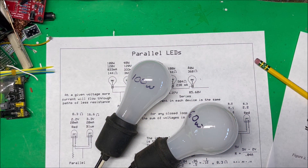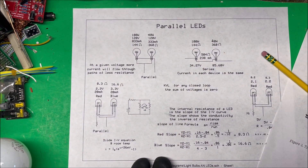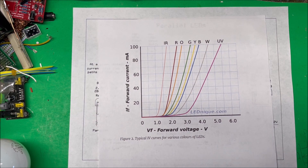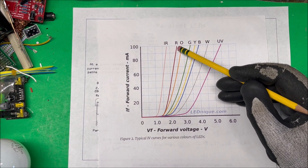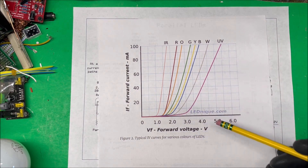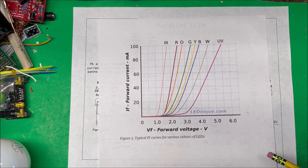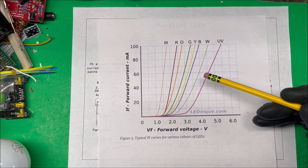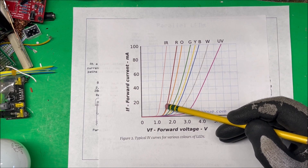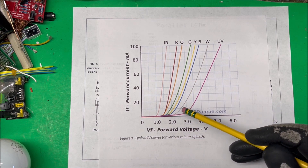So that's incandescent lamps. Now let's look at parallel LEDs. First, we'll look at the IV curve for different colors — a red and a blue. This curve shows us the forward voltage at which the LED turns on. From the current and voltage, we can calculate resistance. The conductance equals the slope of a line tangent to a point on the curve, and resistance is the reciprocal of conductance.